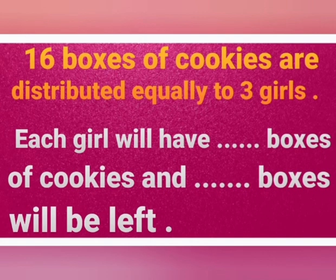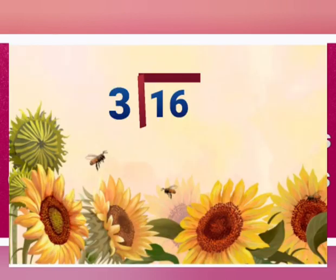16 boxes of cookies are distributed equally to 3 girls. We should know how many boxes each girl will have and how many boxes will be left. So we will divide 16 over 3, asking ourselves what is the number that we multiply by 3 to give us 16 or less than it?